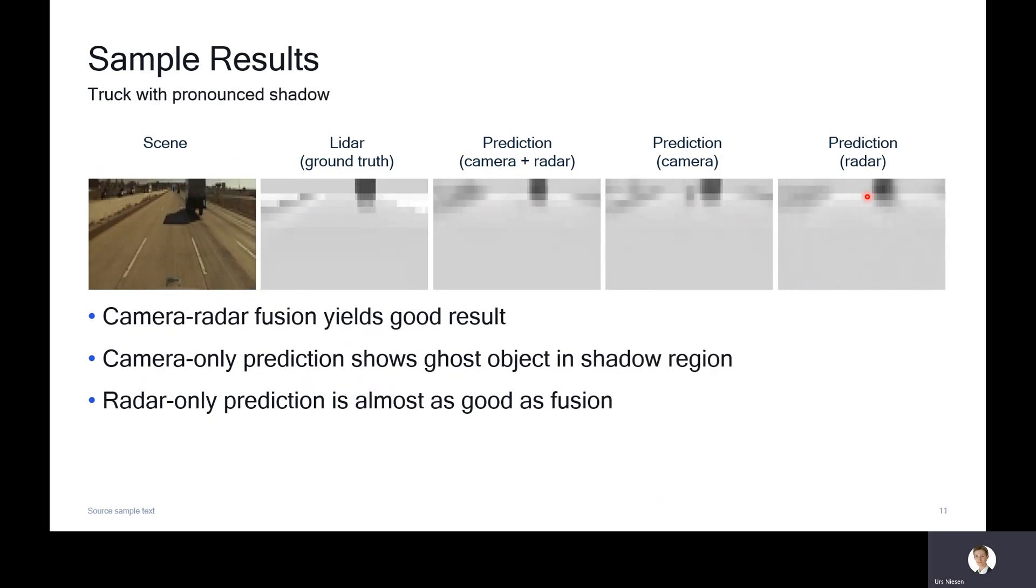Here is the second example of a scene with a truck and a pronounced shadow. Camera radar fusion yields good results. Camera only prediction in this case is worse. You can see this ghost object that is predicted, and this is exactly in the shadow region, so we believe this is the root cause. The radar prediction is almost as good as the fusion.